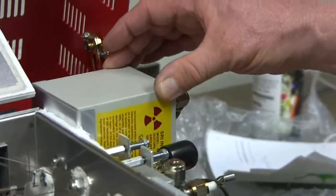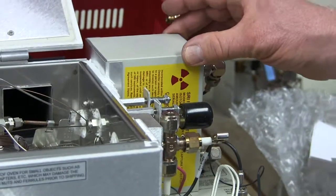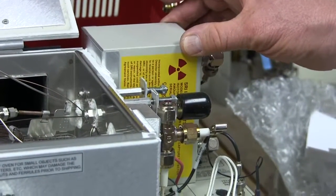This is the electron capture detector. This is a radioactive detector. You can see the radioactive mark here. We abbreviate that as ECD, electron capture detector.